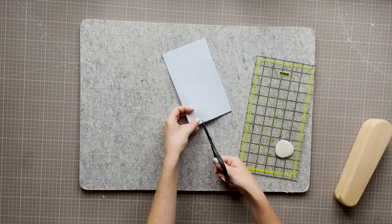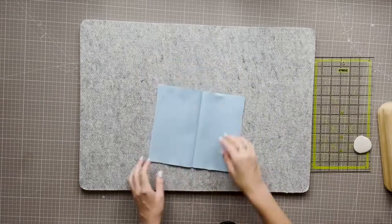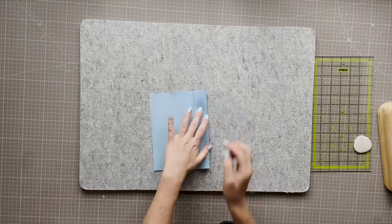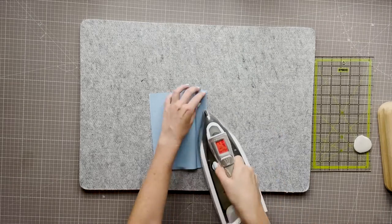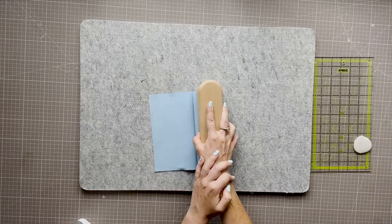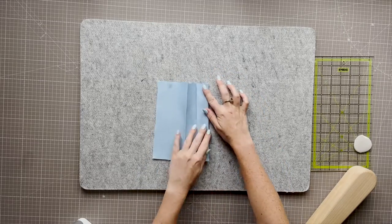Measure out from the fold by one and one quarter inch. Do this in both directions. Now we have our fold lines. Fold on these lines wrong sides together and press.